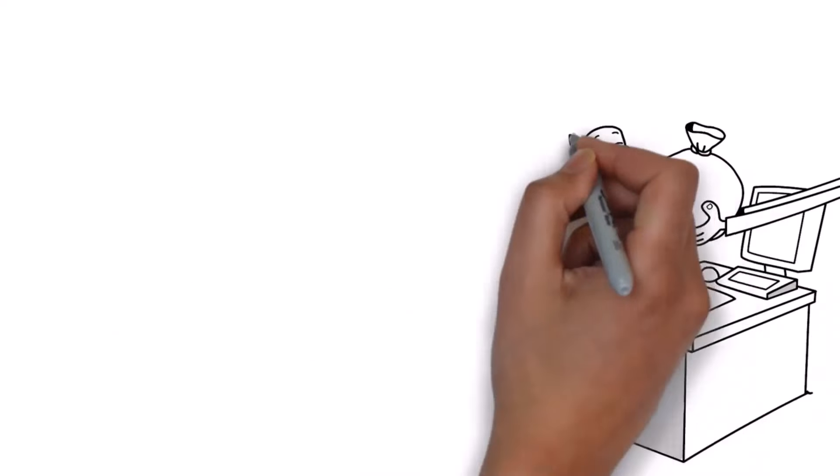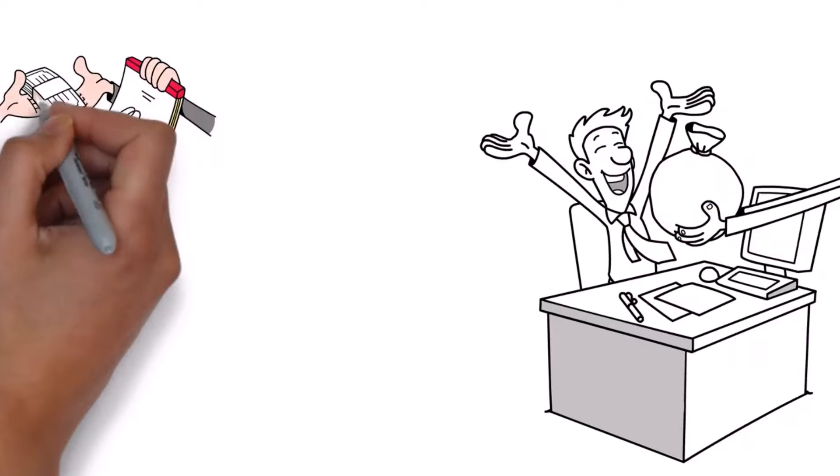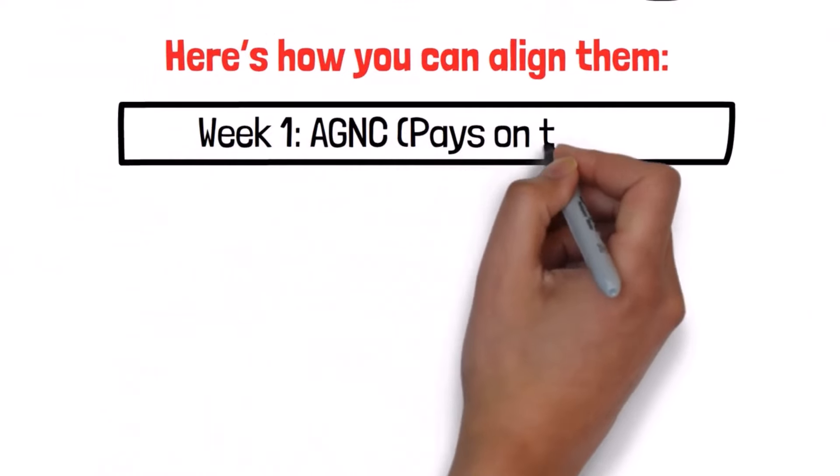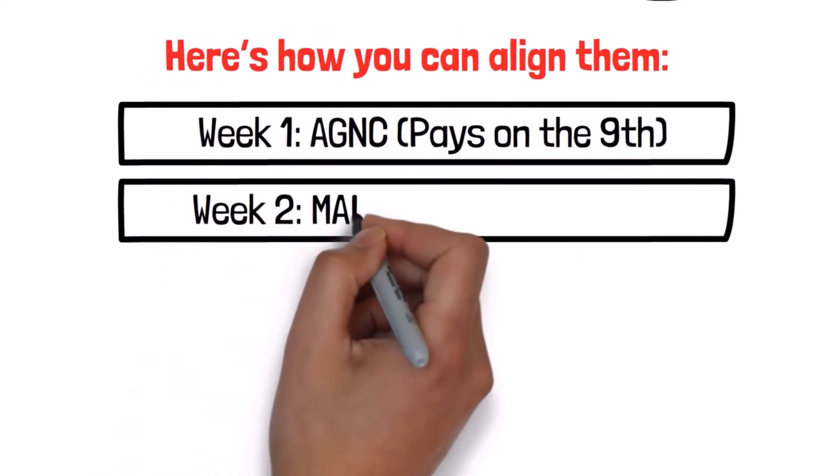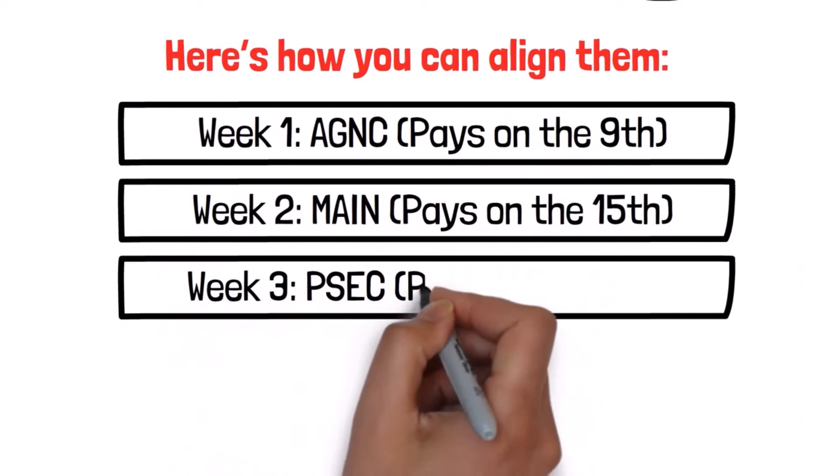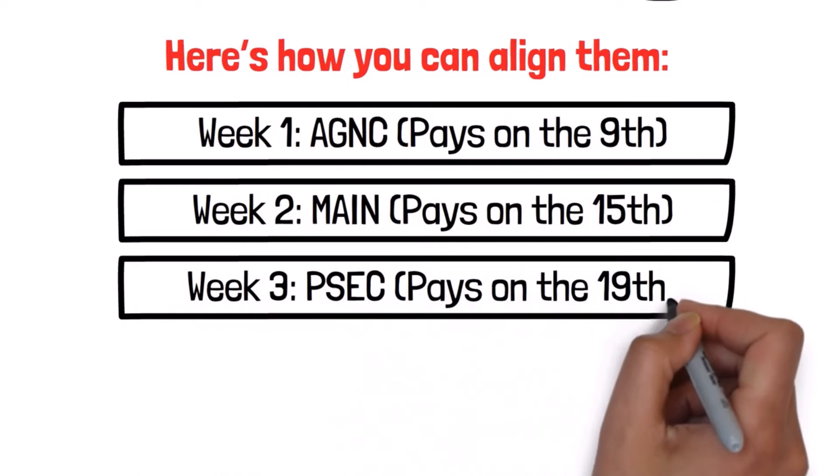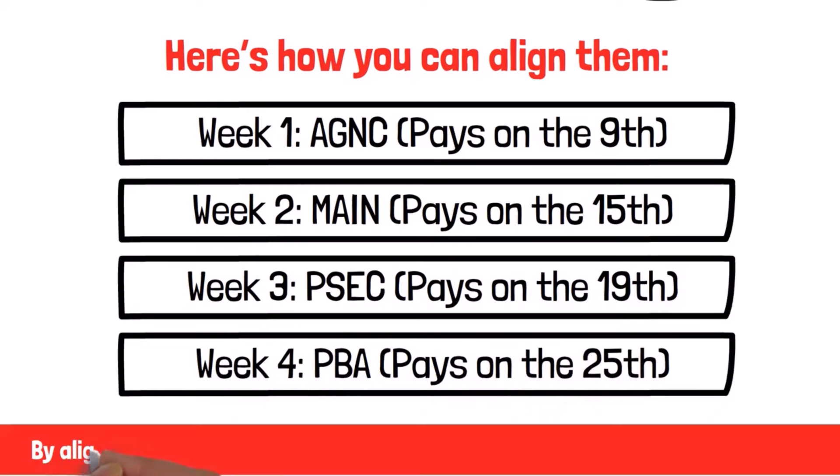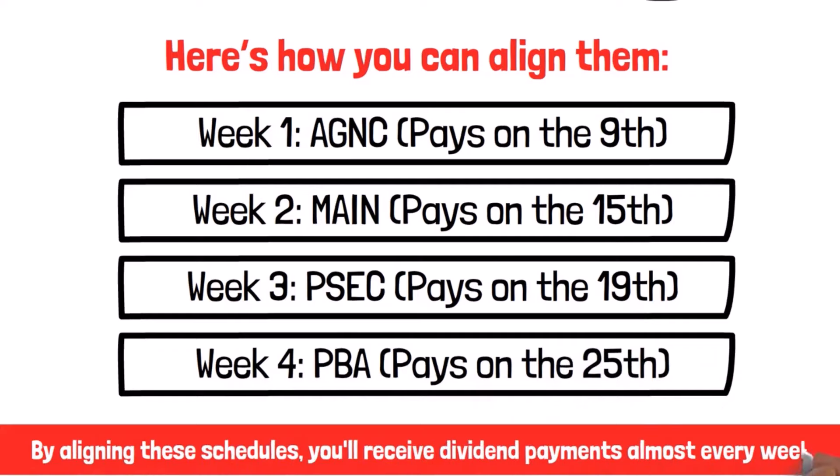To achieve weekly payouts, you'll need to buy stocks that pay at different times of the month. Here's how you can align them: Week one, AGNC pays on the 9th. Week two, MAIN pays on the 15th. Week three, PSEC pays on the 19th. Week four, PBA pays on the 25th. By aligning these schedules, you'll receive dividend payments almost every week.